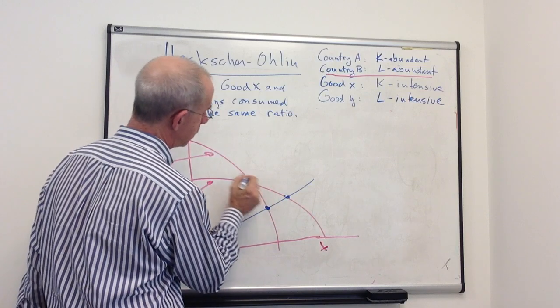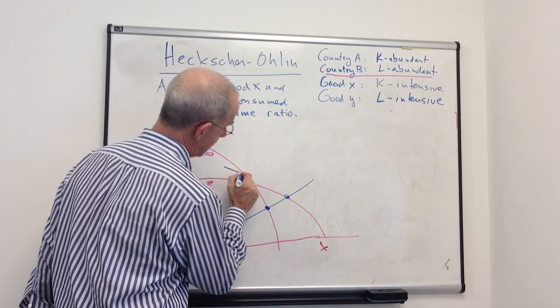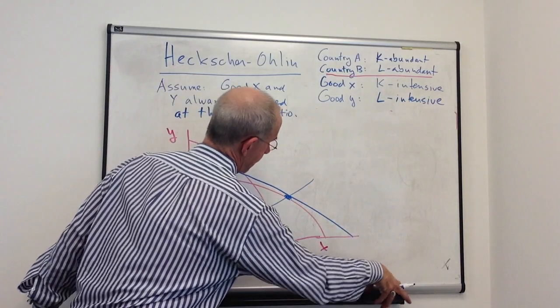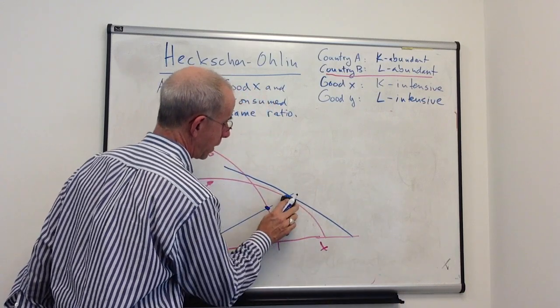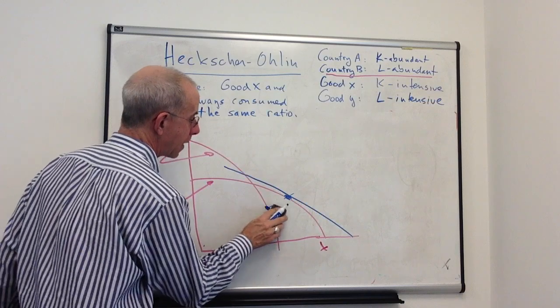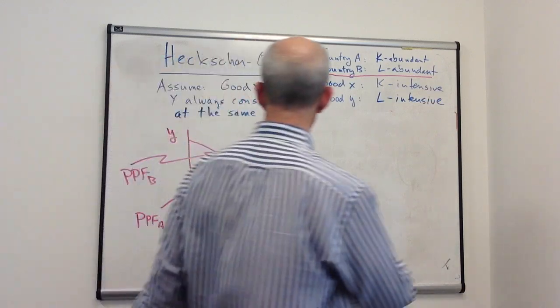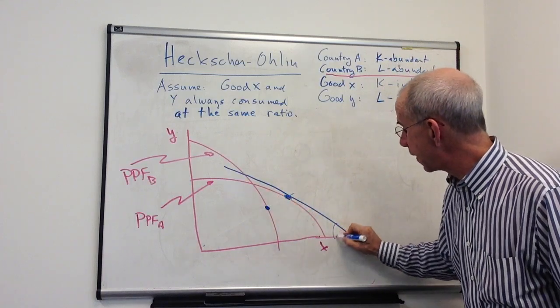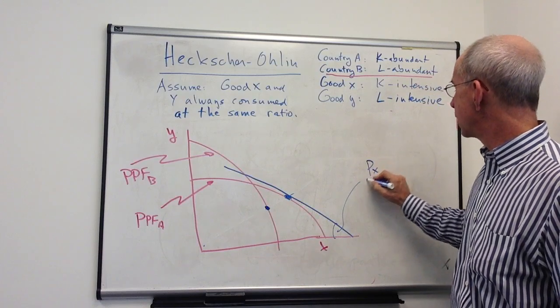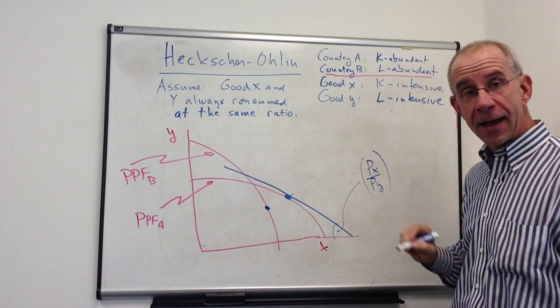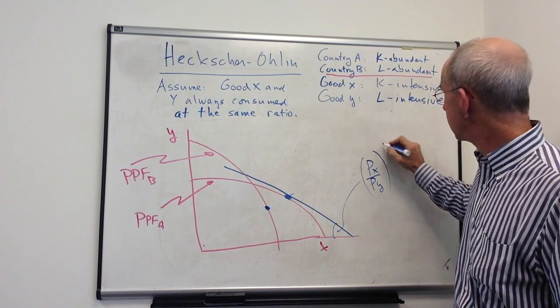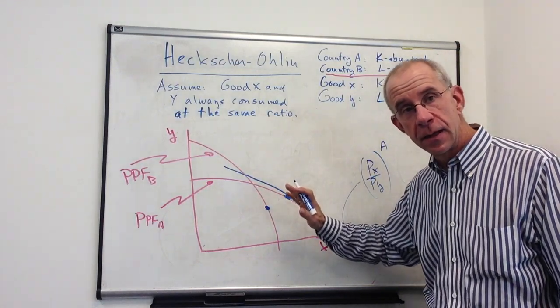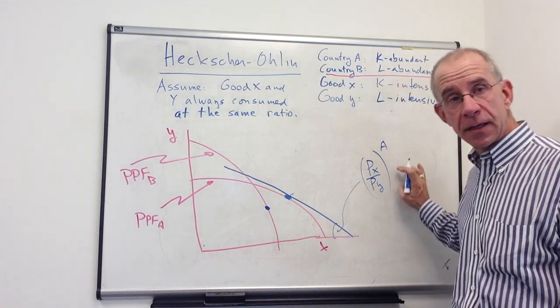And if you recall, if we take a line that is tangent to the PPF at that proportion, and I'm going to get rid of this line because it's going to get in the way. So the tangency of this line, the PPF, is going to give us the slope that is going to give us the relative price of X in country A. So that angle, or the slope of that blue line, is the relative price of X in country A in autarky.